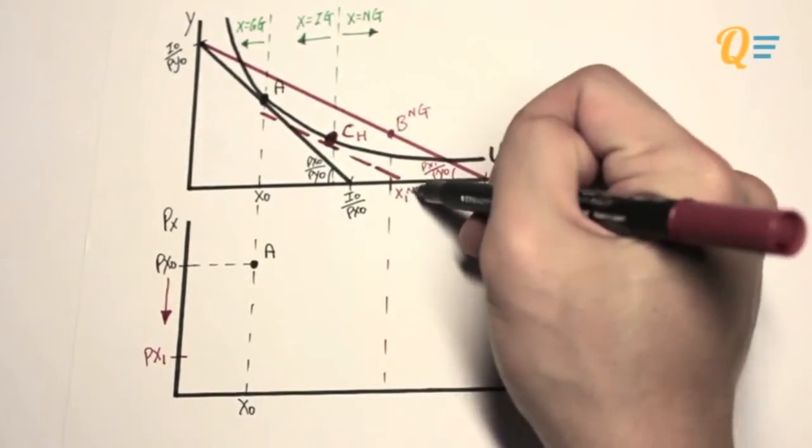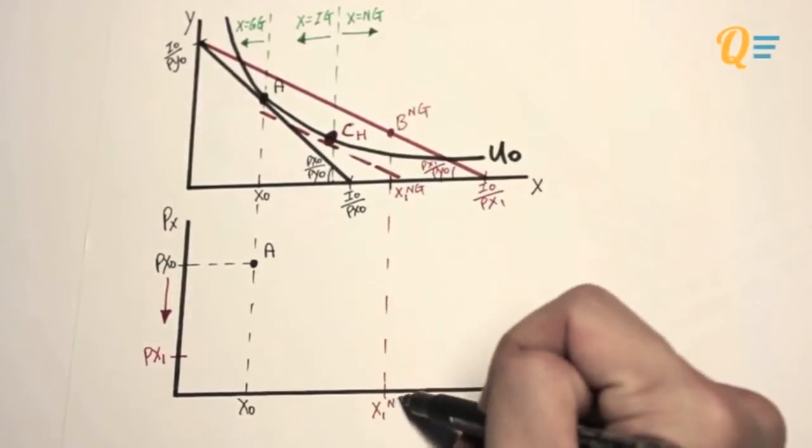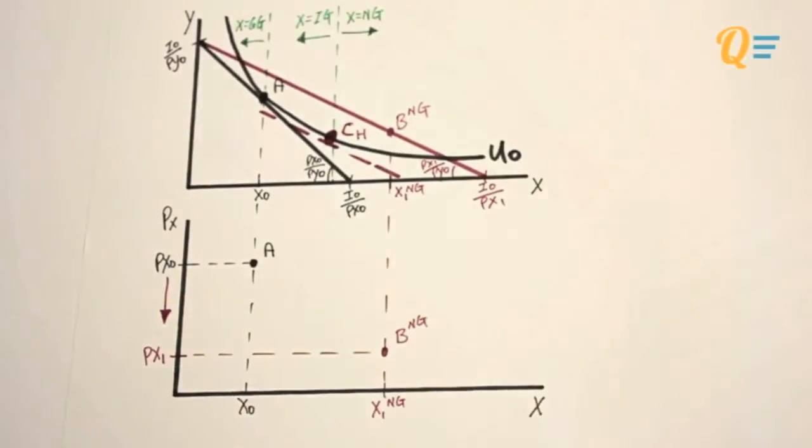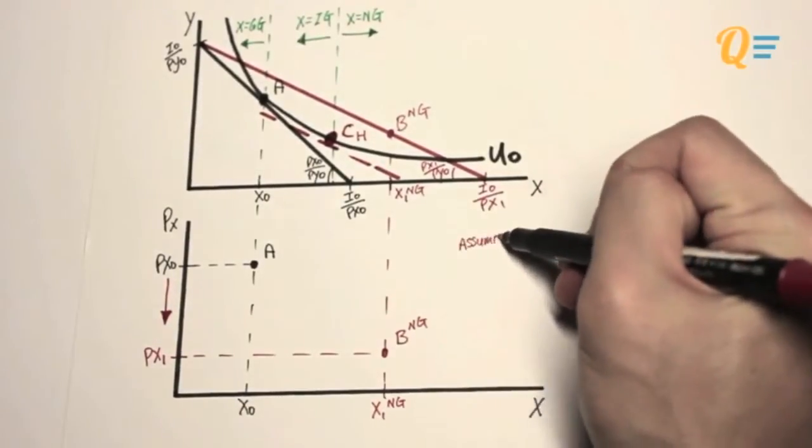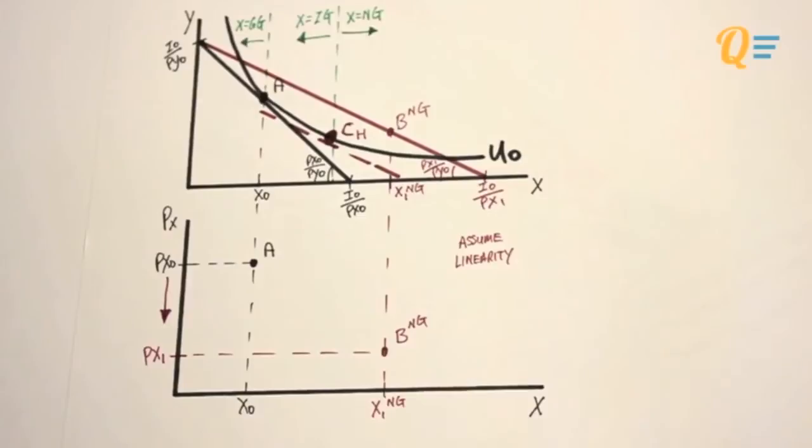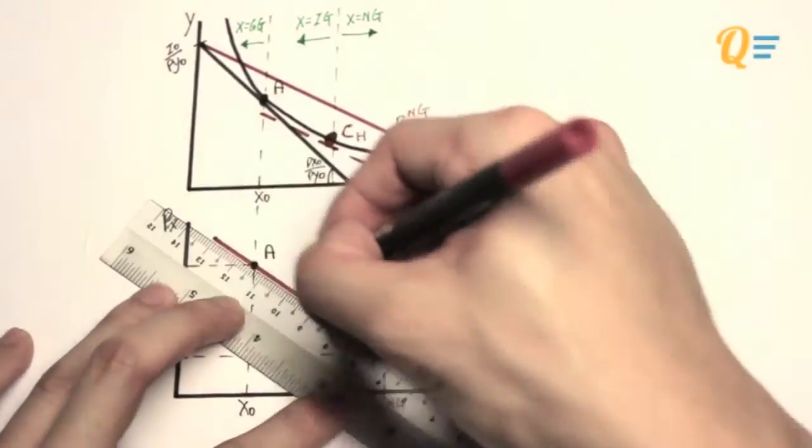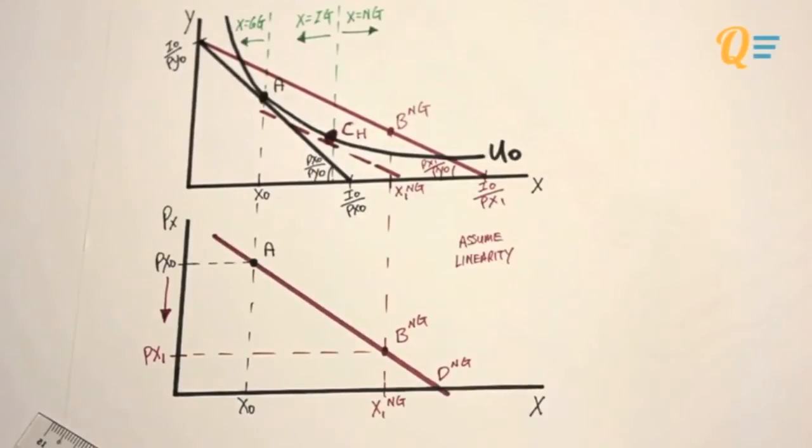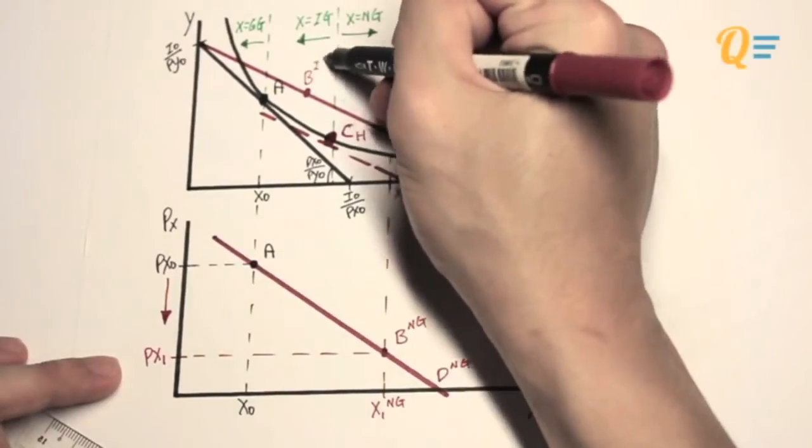I'm going to extend this all the way down to the second graph. So I'm going to label this as X1 normal good. And given X1 normal good and P1, I've got point B. So I'm going to assume linearity here. And what I'm going to do is I'm going to connect points A and point B, so that I have a demand curve showing that X is a normal good. So this is how you typically derive a demand curve.